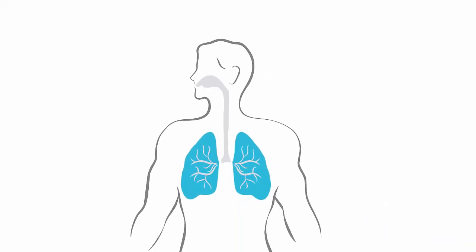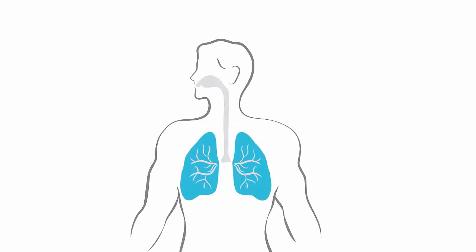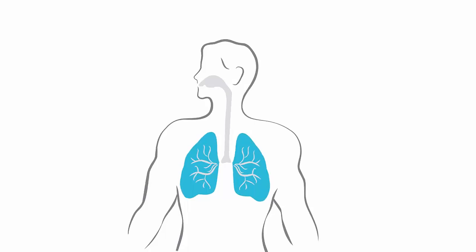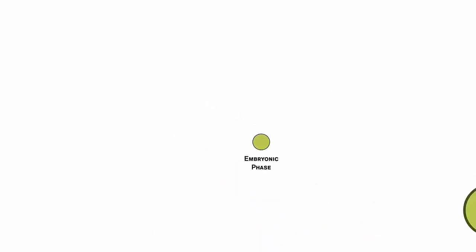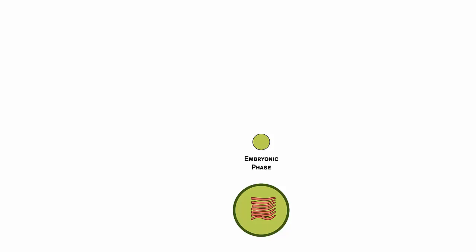How do our lungs form? Lungs — we all have them, but when does this vital organ form? Well, let's doodle it out. Lungs start forming during the embryonic phase, at four weeks of gestational age, early in the pregnancy. The baby is a ball of cells that eventually separates into layers.